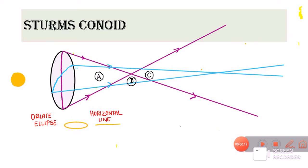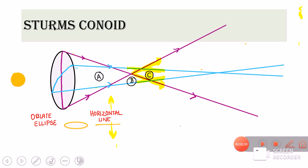Now imagine standing at point C. The vertical rays, which converged at point B, have now started to diverge, so the horizontal line begins to open up. The horizontal rays are still converging, but converging a little better than at point B. So what we get at point C is an oval — and since this oval is more horizontal in shape, it is called a horizontal oval.